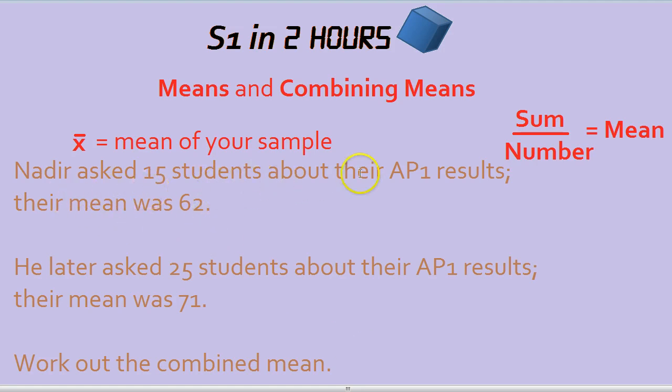Nadir asked 15 students about their AP1 results, their mean was 62. He later asked 25 students about their AP1 results and their mean was 71. Work out the combined mean.